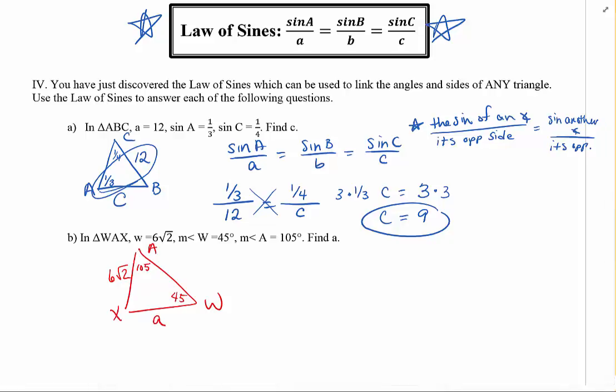The law of sines says the following. If you know angles and their opposite sides, you can solve for missing parts. So the sine of an angle, we'll do 105, divided by its opposite side A, is equal to the sine of a different angle divided by its opposite side. Angle over side, angle over side, as long as they're opposite. And then we cross multiply.